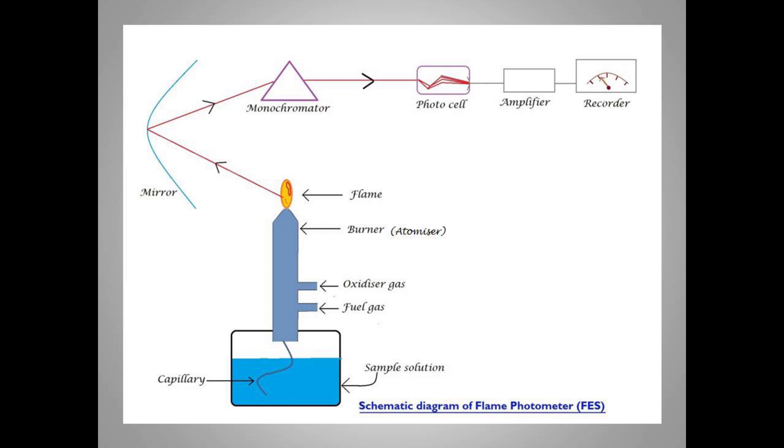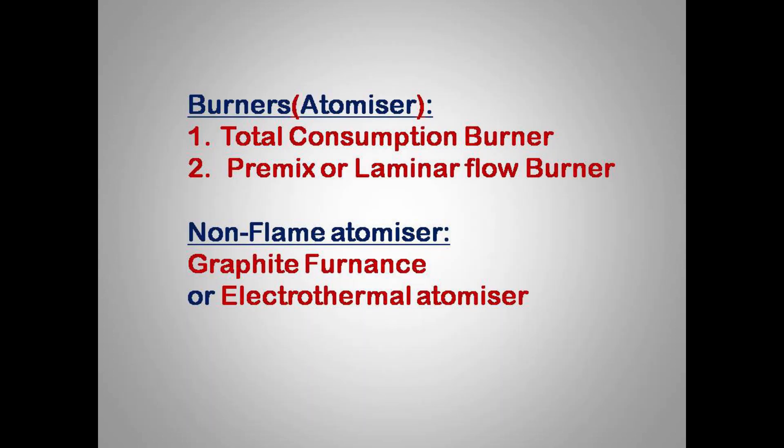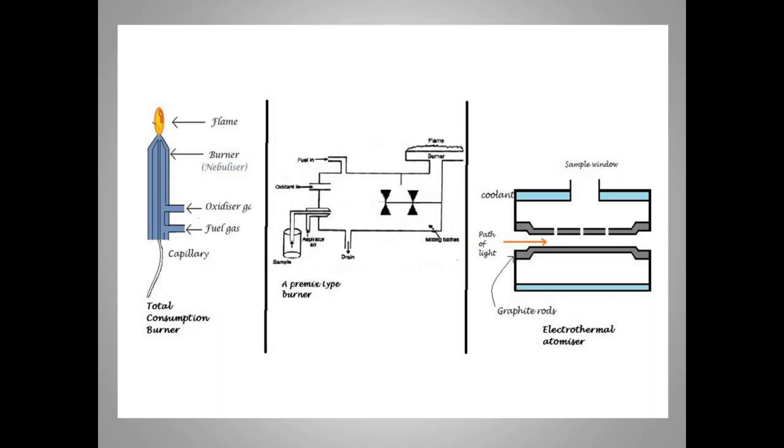Let us discuss some of the components. The most important component is burner, where the atomization of sample takes place. Hence, burner is also known as the atomizer. The examples of burners are total consumption burner and premix or laminar flow burner. There is another burner which is a non-flame atomizer known as the graphite furnace or electrothermal atomizer. That means this burner doesn't have flame in it. We will not discuss these burners in detail as they may require another video to understand, but we will see the diagrams for each burner.